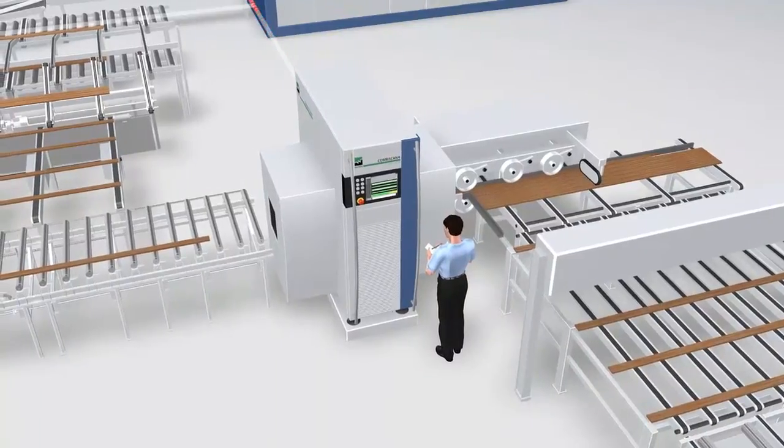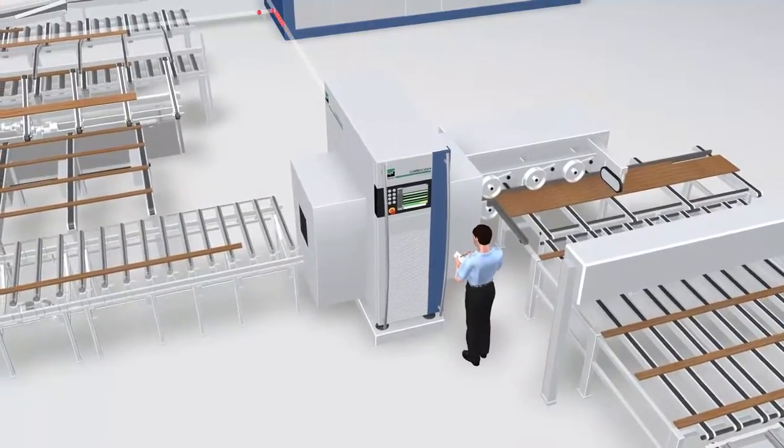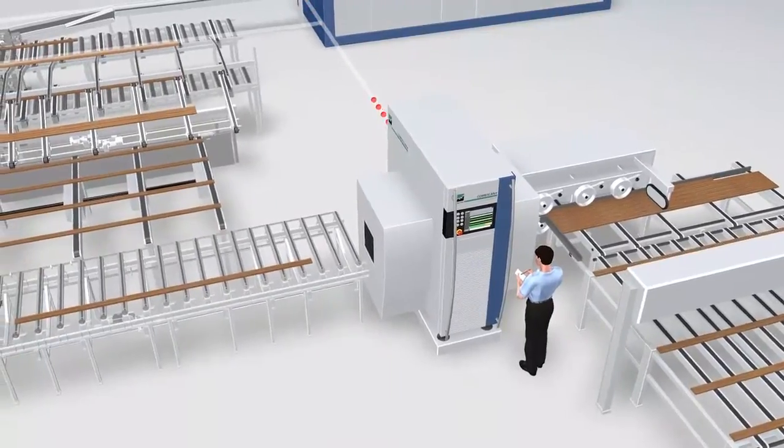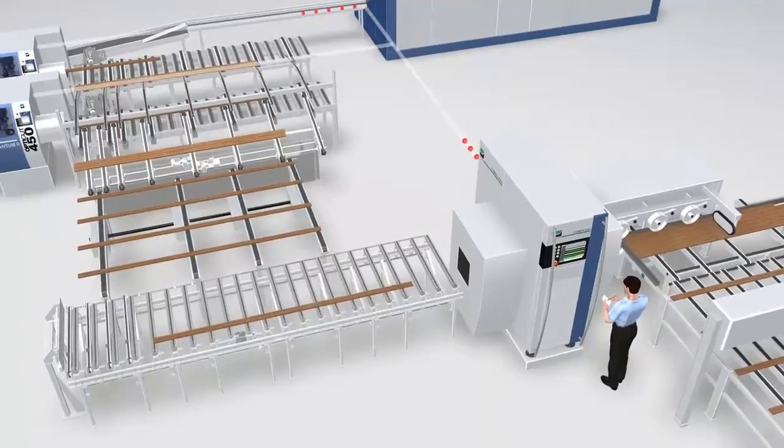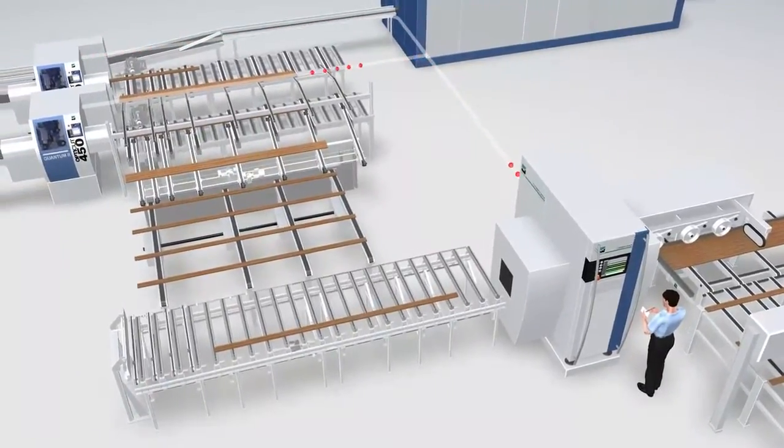The CombiScan Plus C400 detects with the multi-sensor technology optically and optionally also via x-ray the relevant board data and delivers the optimizing result to the high speed optimizing cross cut saws.